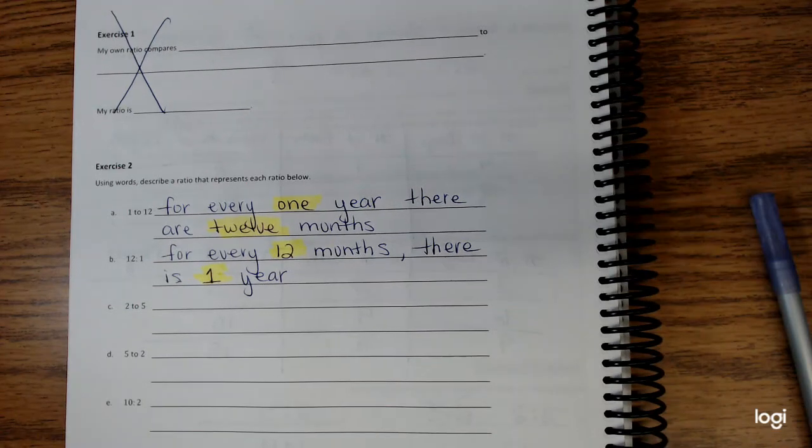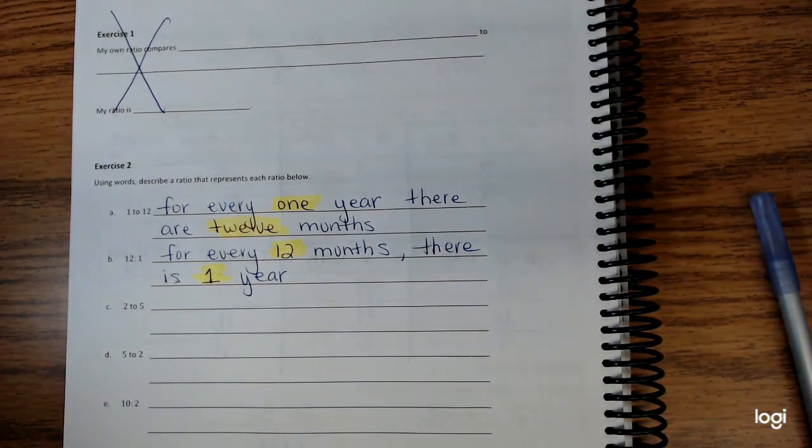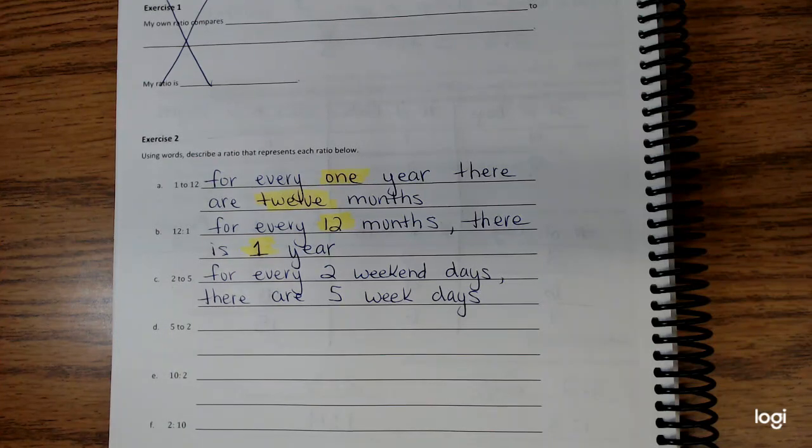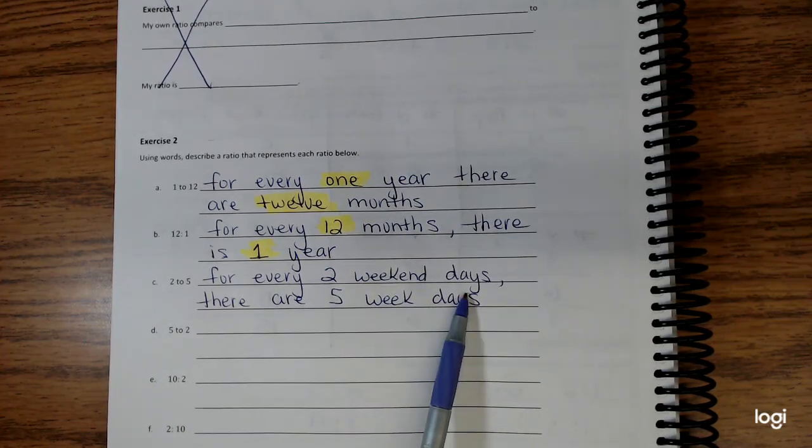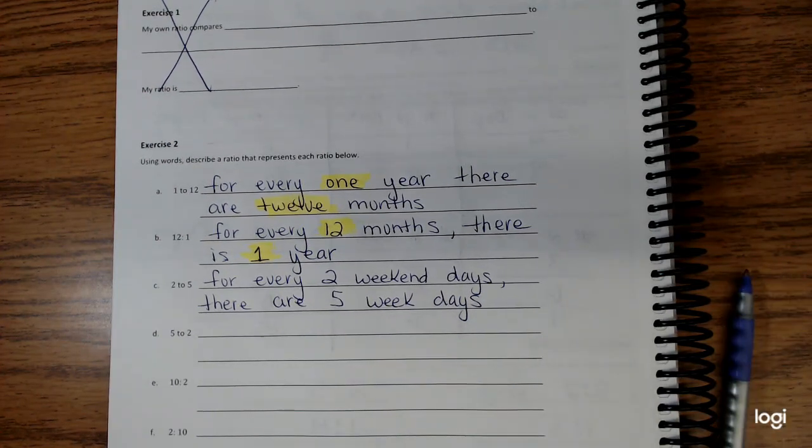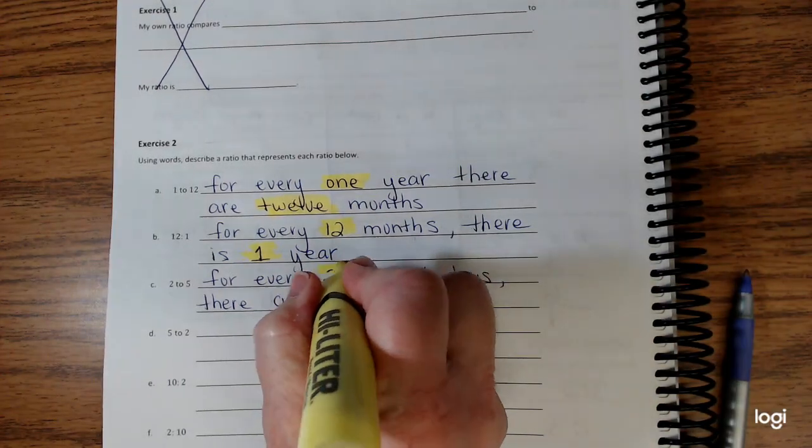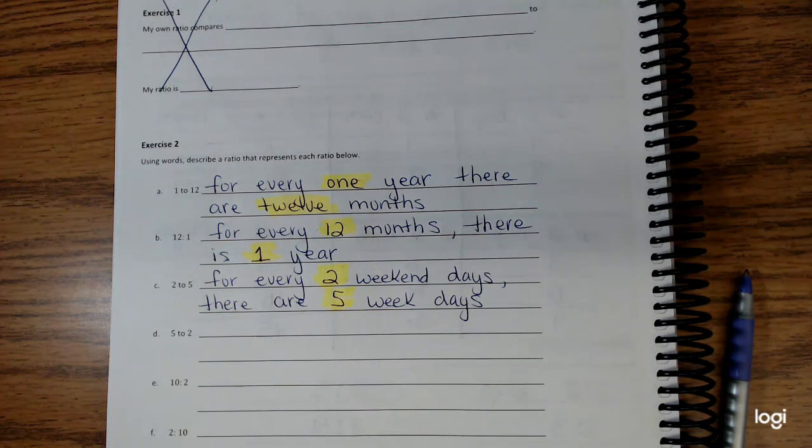Let's look at the next one. I have the numbers 2 and 5. I need to come up with a situation for 2 and 5. The example I have is for every two weekend days, Saturday and Sunday, there are five weekdays. My story matches with my ratio. I had two listed first and five listed second.